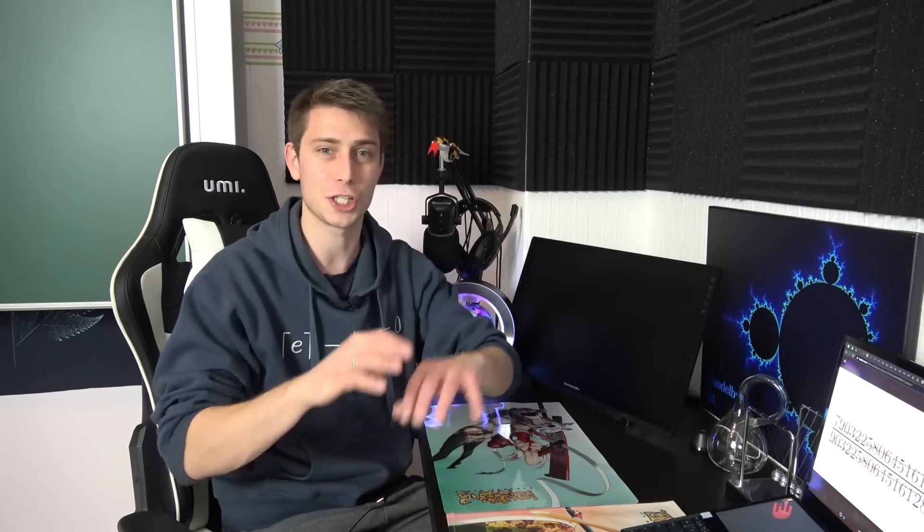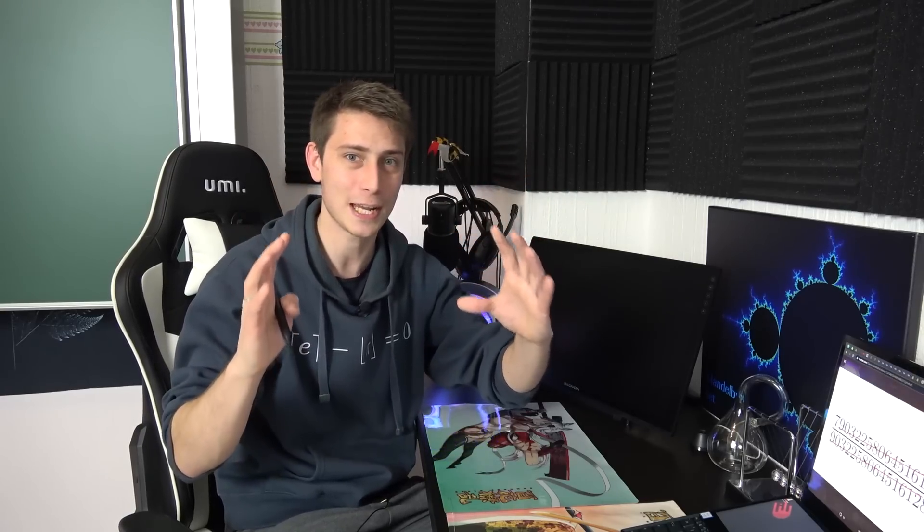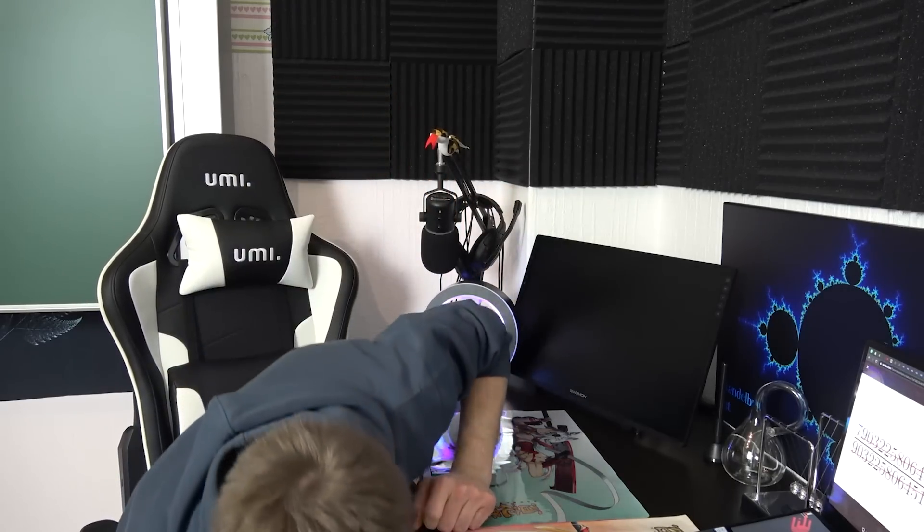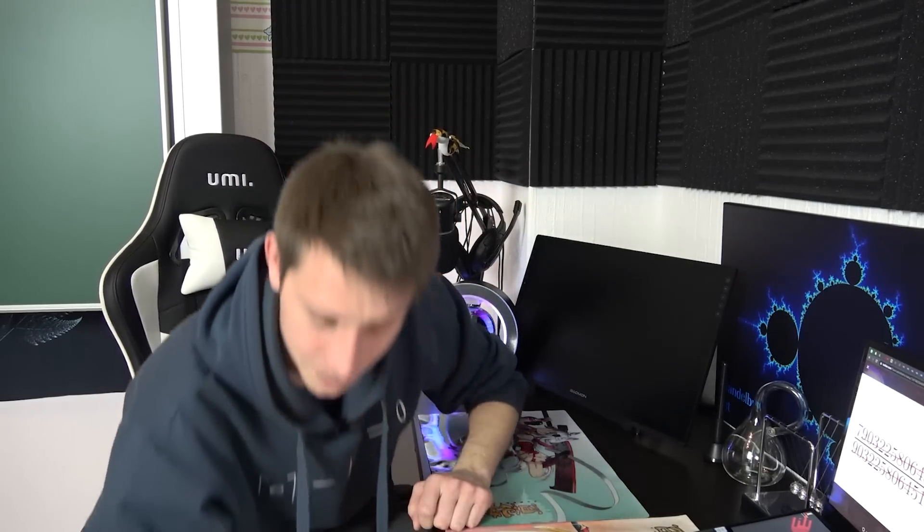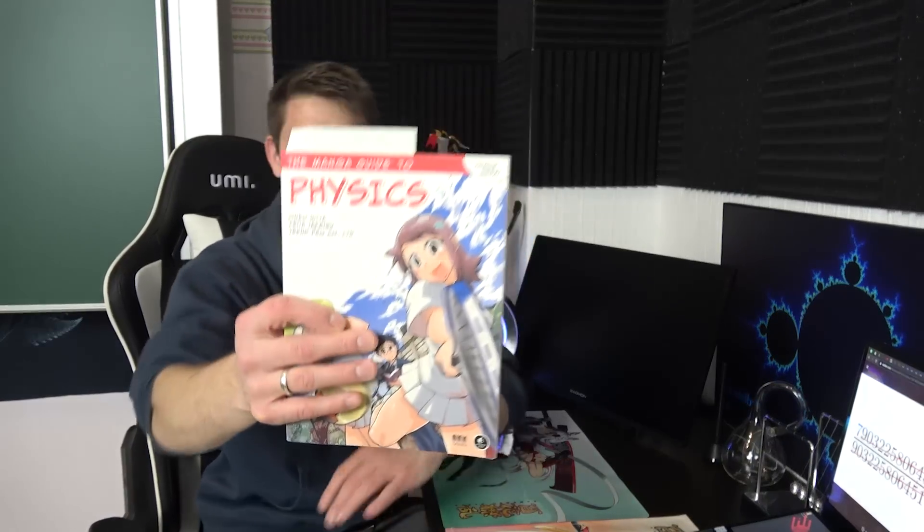For this video we are going to ignore all the general relativistic properties of big, very mass-rich objects. We are just taking everything into account from a classical perspective. Now to proceed further, we are going to take a look at the most prestigious graduate physics book I could find in my library, namely The Manga Guide to Physics.